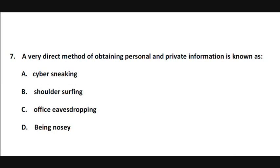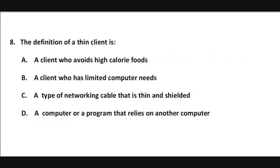Question 7. A very direct method of attaining personal and private information is known as: A- Cyber Sneaking, B- Shoulder Surfing, C- Office Eavesdropping, D- Being Nosy. Question 8. The definition of a thin client is: A- A Client Who Avoids High Calorie Foods, B- A Client Who Has Limited Computer Needs, C- A Type of Networking Cable That Is Thin and Shielded, D- A Computer or Program That Relies on Another Computer.